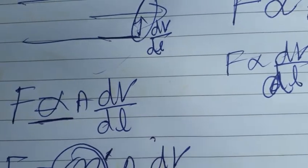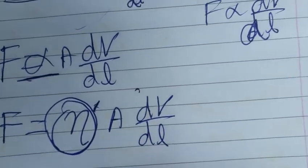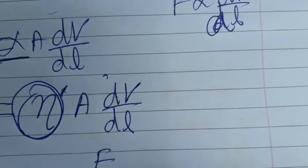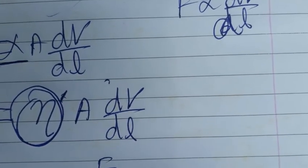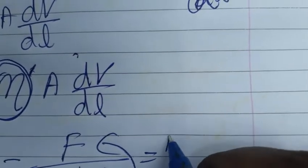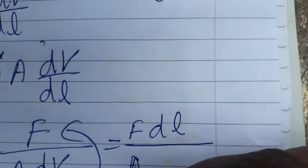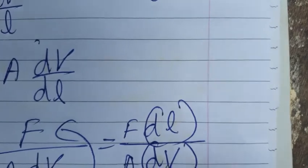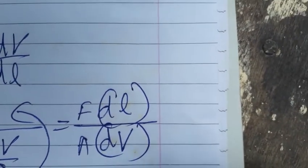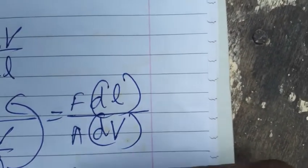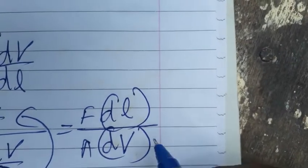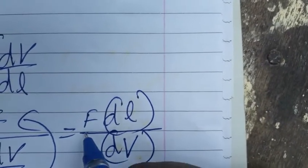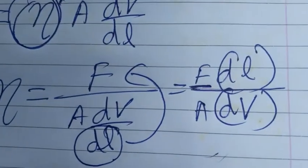Rearranging, the coefficient of viscosity η equals force divided by area times (dv/dl). Bringing dl to the numerator, η equals force times length divided by area times velocity. The small d's are from differentiation, so we don't need to worry about them — we only need the units. The SI unit of force is Newton.